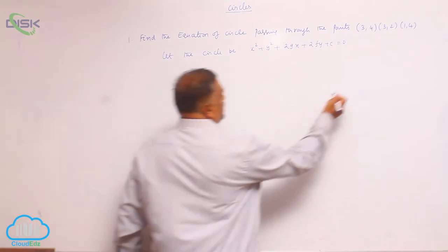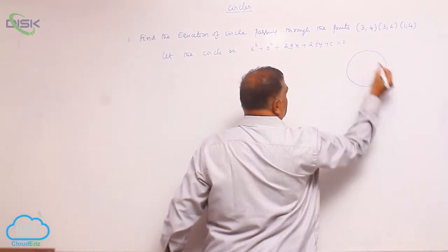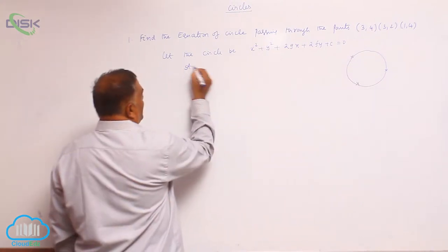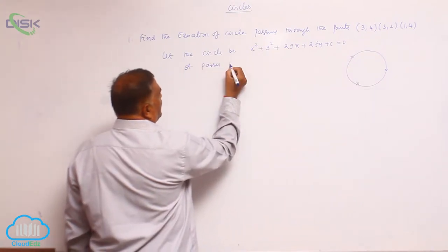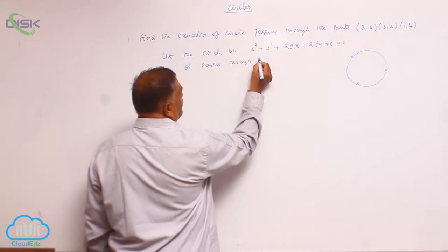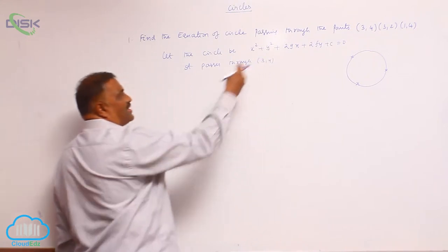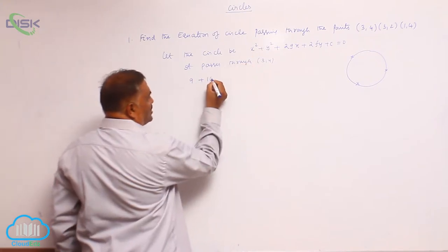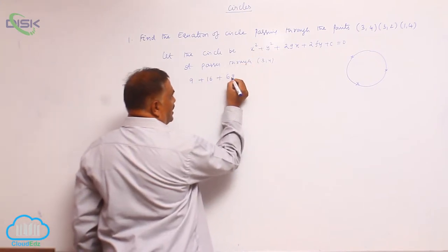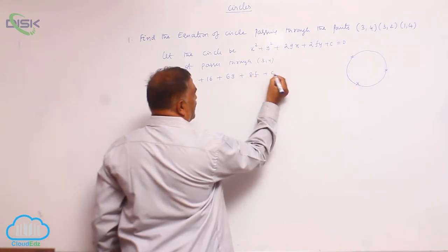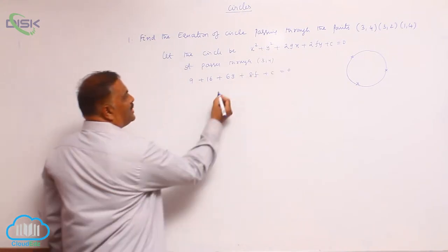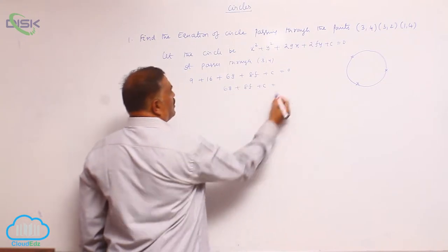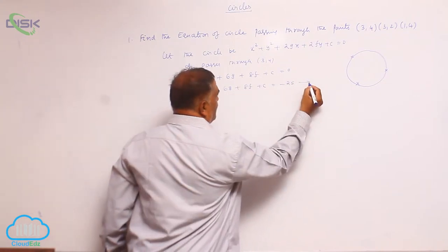This circle equation passes through all three given points. For the first point (3, 4), substitute x = 3 and y = 4: 9 + 16 + 6g + 8f + c = 0, which gives 6g + 8f + c = −25. This is equation 1.